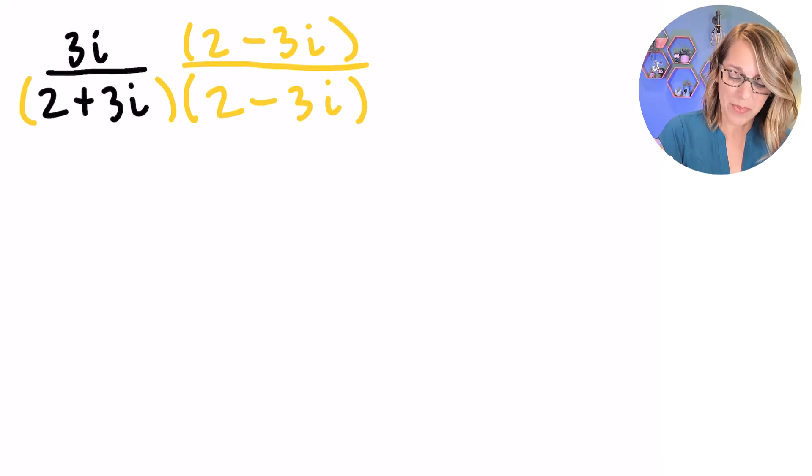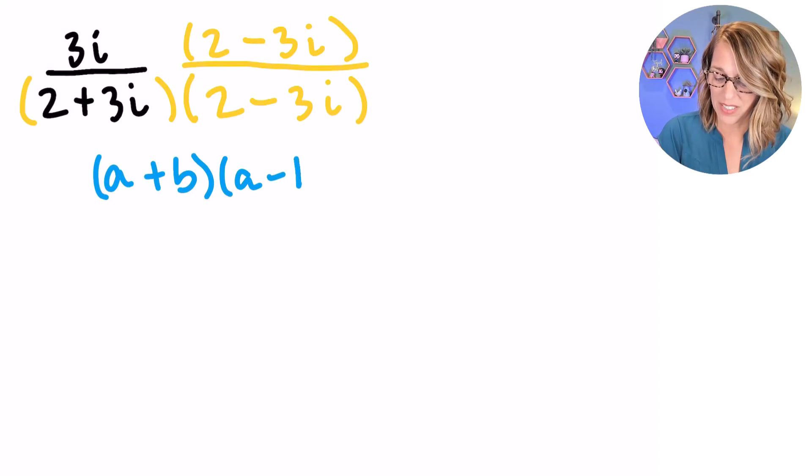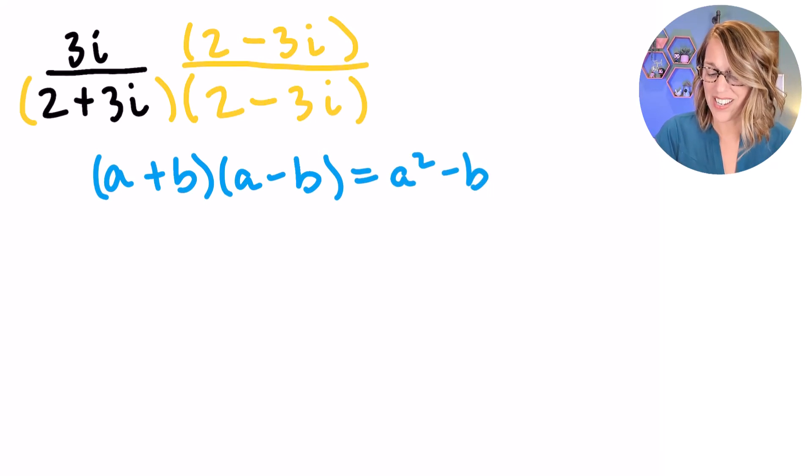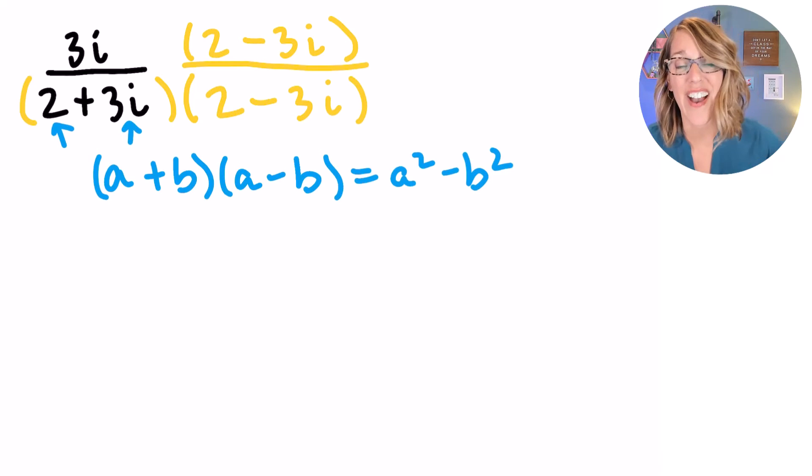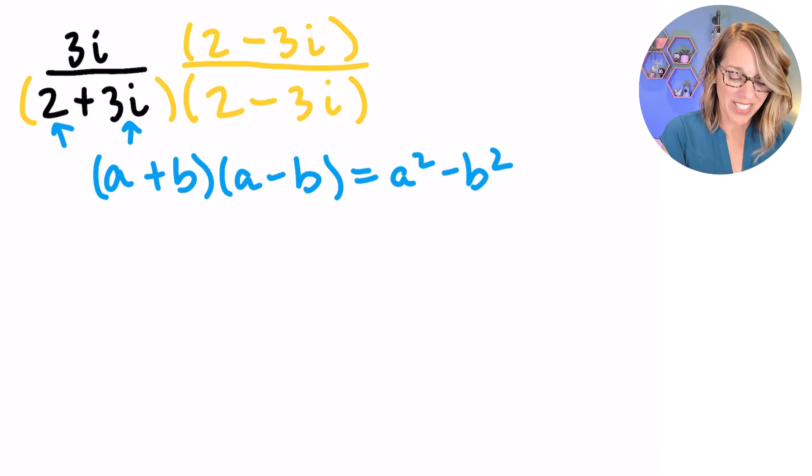Now I'm going to use that same property. A plus B times A minus B is equal to A squared minus B squared. This time, A is my 2, and B is my 3I. Let's start to multiply some things out.